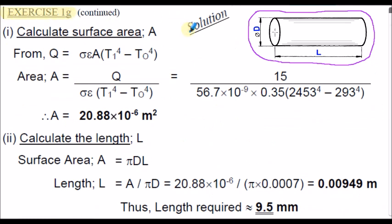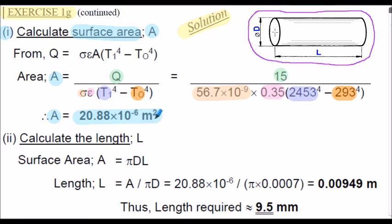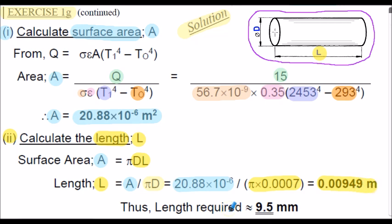Solution continued. In part 1, we calculate the surface area A by rearranging the equation for A and inserting the values. We calculate the area to be 20.88 times 10 to the negative 6 metres squared. In step 2, we calculate the length of the wire, symbol L. Noting the surface area formula for the wire is pi multiplied by D multiplied by L, we rearrange for L: that's the surface area divided by pi D. Inserting the values, the length is 0.00949 metres, so approximately 9.5 millimetres.